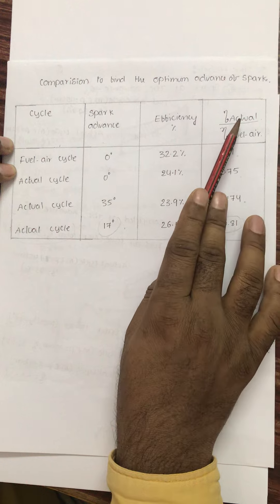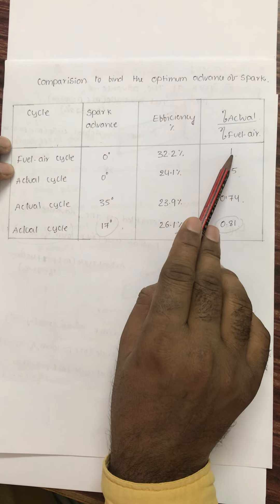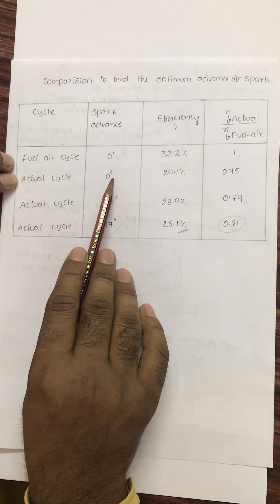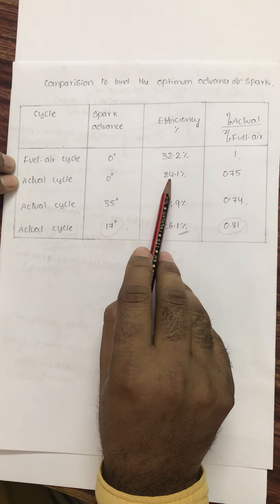And this ratio, anyway, both are the same, so it becomes one. In case of actual cycle, if that spark is advanced as discussed in the theoretical case, the efficiency falls down.